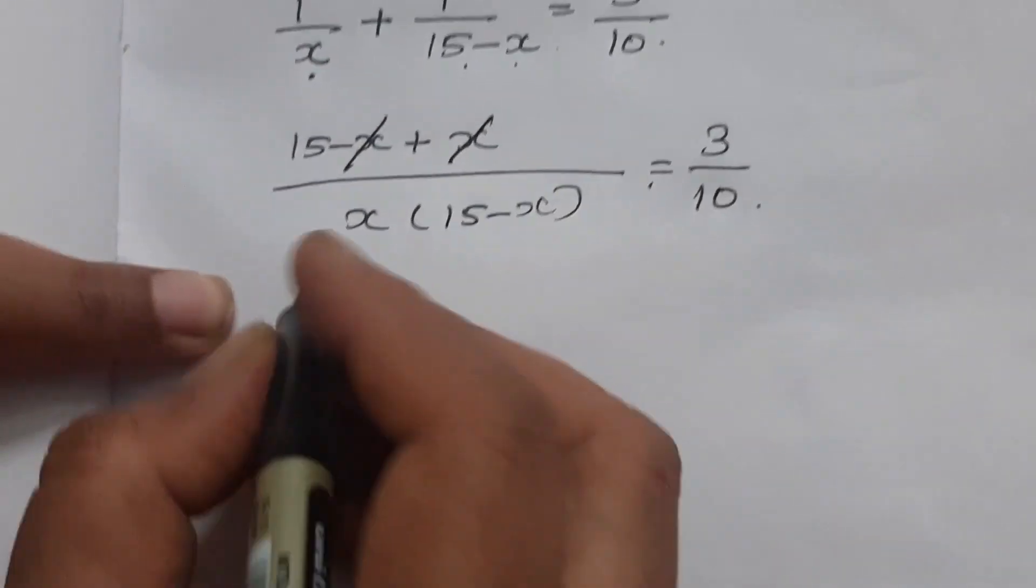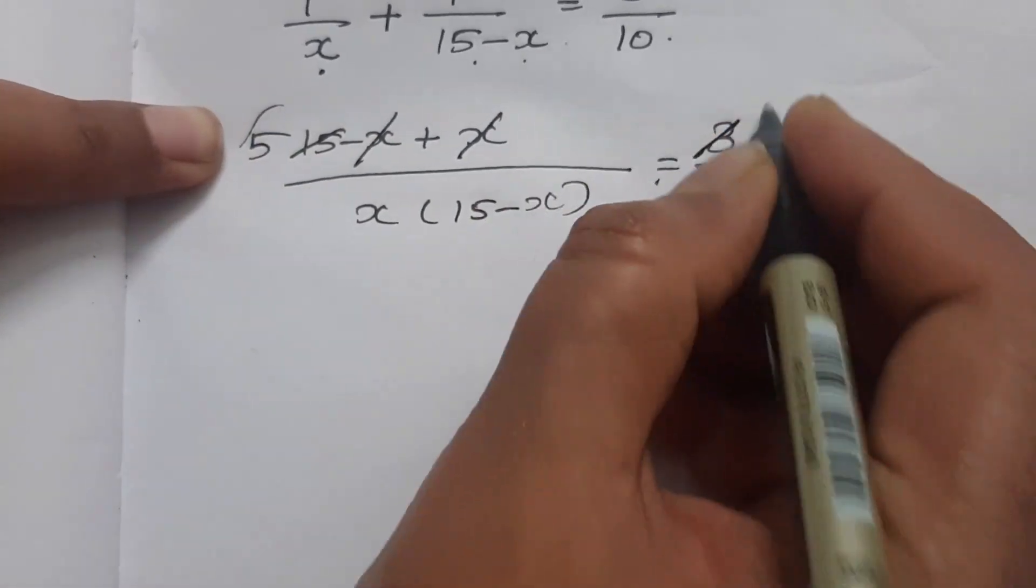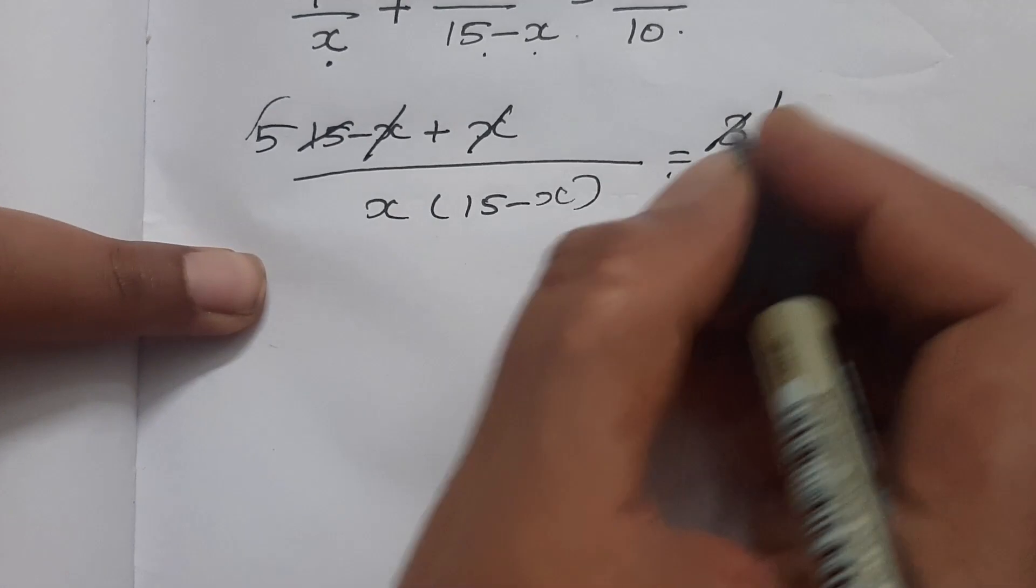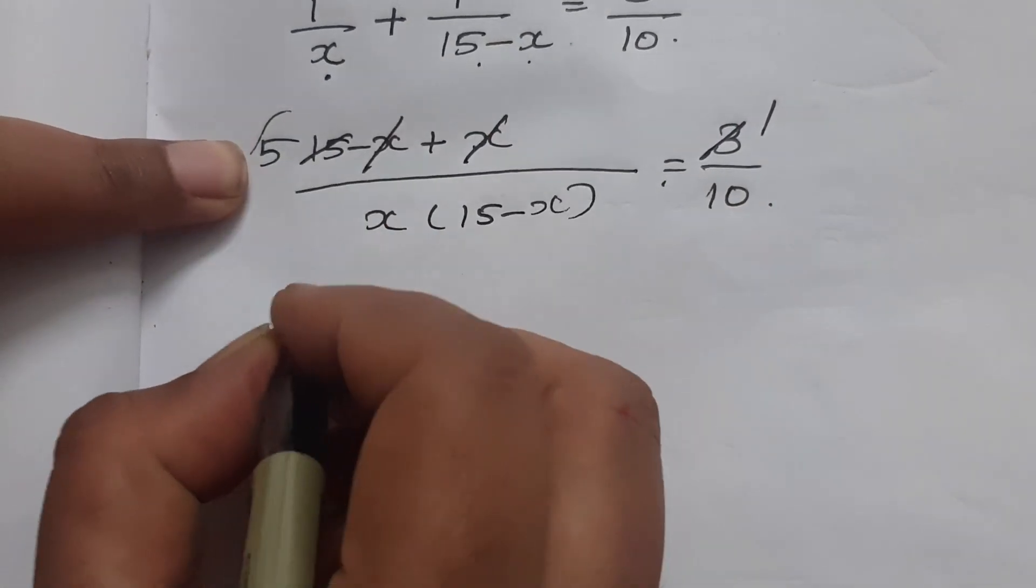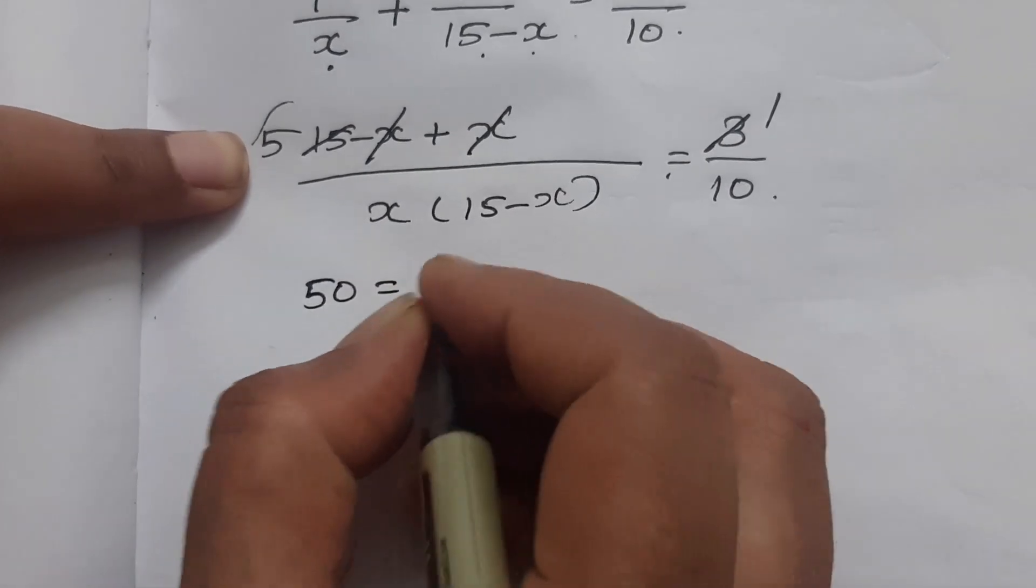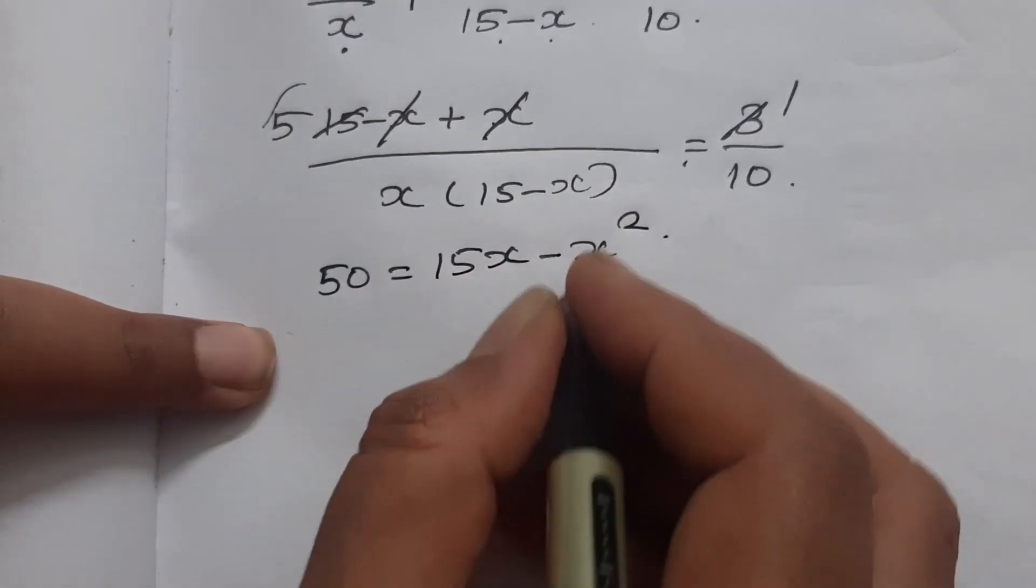The numerator simplifies to 15. Cross multiplying, 15 times 10 is 150, divided by 3 gives 50. So 50 equals 15x minus x square.